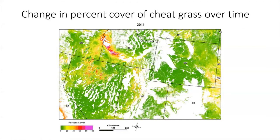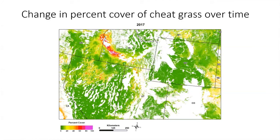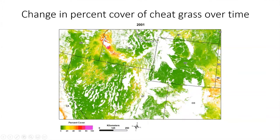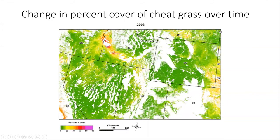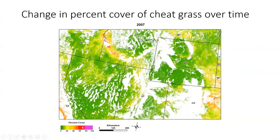The cheatgrass invasion is dynamic, as you can see in this image — a series of maps going from 2001 all the way to 2017. In dark red are areas with a large percent cover of cheatgrass. Here's northern Nevada with hot spots of cheatgrass, as well as in Idaho and Utah. There is cheatgrass in western Colorado as well, but without the dark red spots where maybe as much as 70 percent of the land is covered in cheatgrass.